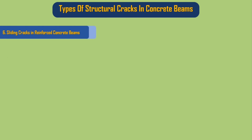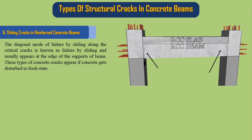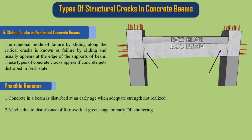Sliding cracks in reinforced concrete beams: The diagonal mode of failure by sliding along the critical cracks is known as failure by sliding and usually appears at the edge of the supports of the beam. These types of cracks appear if concrete gets disturbed in the fresh state. Possible reasons: 1. Concrete in a beam is disturbed at an early age when adequate strength has not been realized. 2. May be due to disturbance of formwork at green stage or early de-shuttering.